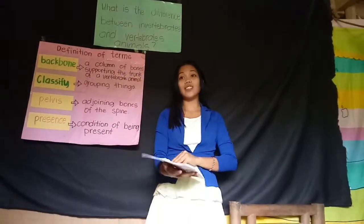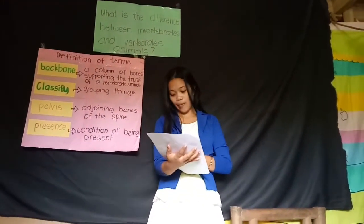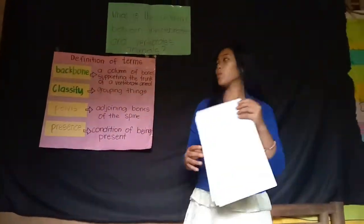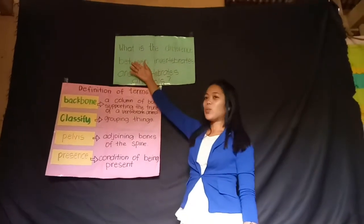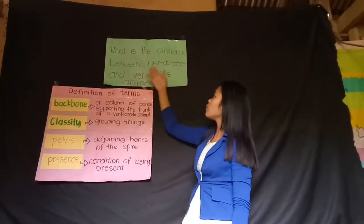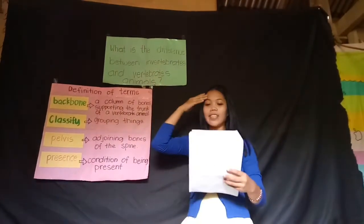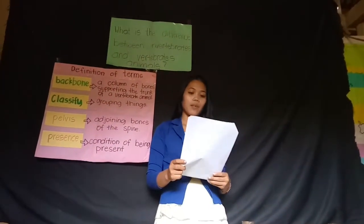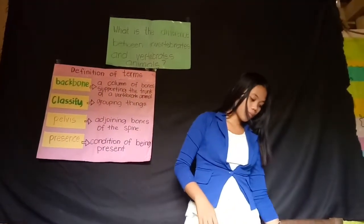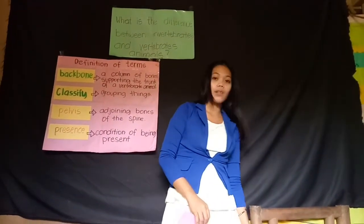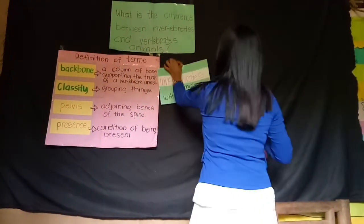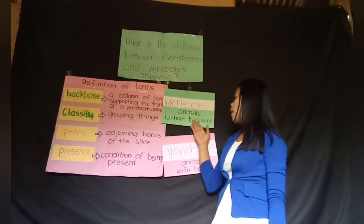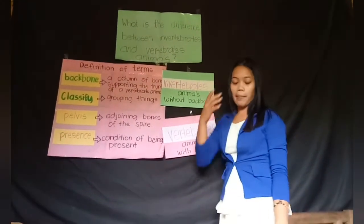Did you understand our lesson for today, class? Yes, ma'am. Very good. Let us go back to the question. Everybody please read: What is the difference between invertebrates and vertebrates animals? Who will answer? Invertebrate animals are animals without a backbone, and vertebrate animals are animals having a backbone. Very good. Invertebrates are animals without a backbone and vertebrates are animals with a backbone.